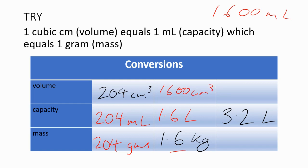And last of all, for your 3.2 litres, your equivalent mass could have been a couple of answers there. You could have had 3.2 kilograms or you could have had 3,200 grams. And your volume would have just been one answer. It would have been 3,200 centimetres cubed.